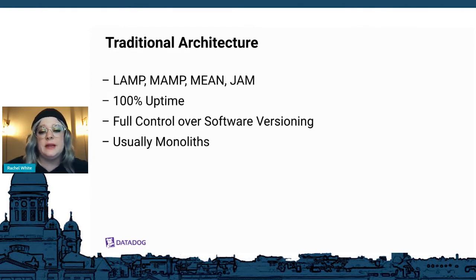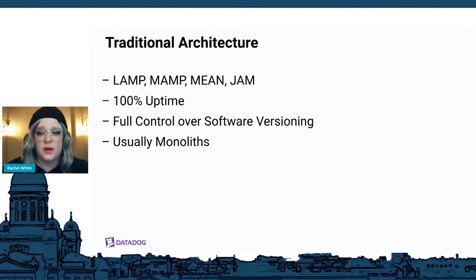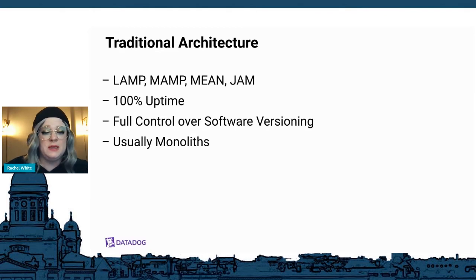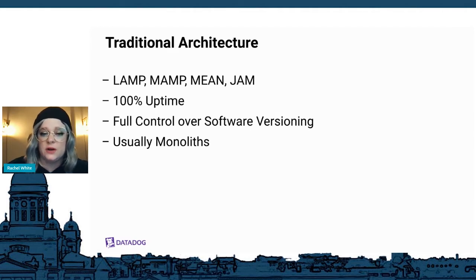These are apps that have 100% uptime. You can configure your own server and have full control over what versions of whatever technologies you're working with. We refer to these kinds of apps as monoliths, usually because they're typically controlled via a single deployment, which means we can have a quick minimum viable product, but it's harder to change a piece of our application architecture as nothing is isolated and lots of things rely on each other.